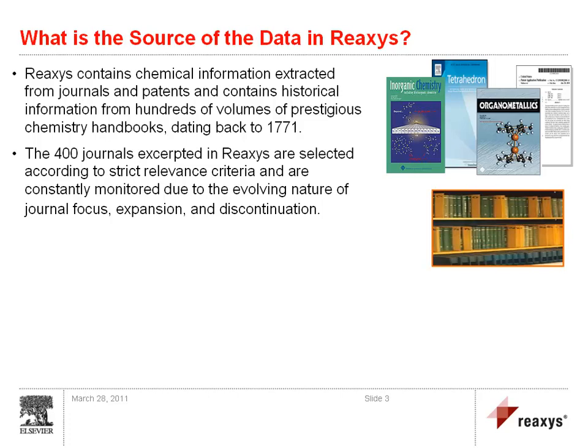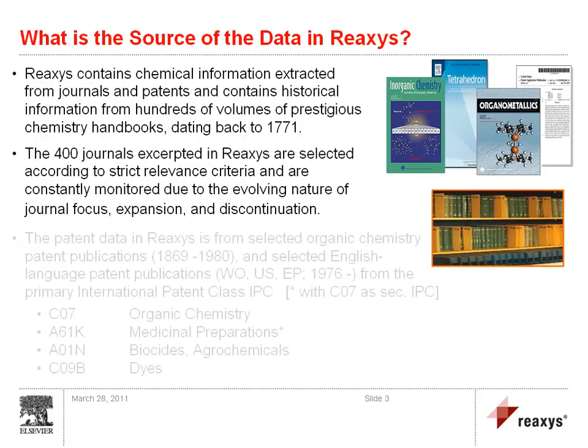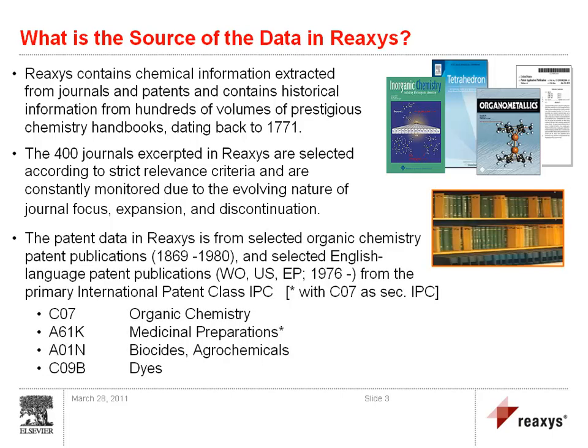The patent data in ReAxis is from selected organic chemistry patent publications from 1869–1980, and selected English language patent publications from world, US, and European patent offices. The primary international patent classes covered are organic chemistry, medicinal preparations, biocides, agrochemicals, and dyes.